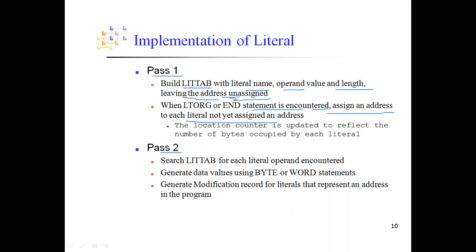Once you encounter LTORG or reach the end, you assign the addresses and load them into the address field of the LITTAB. In Pass 2, you search the LITTAB for each operand encountered and generate data values using BYTE or WORD statements — for example, generating 454F46. Optionally, you generate modification records, which are needed whenever literals represent a direct address in the program.